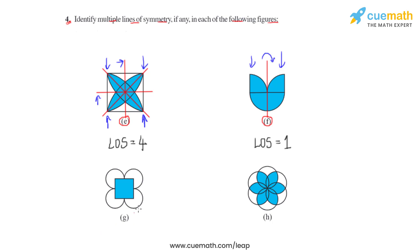Figure G consists of a square with symmetrical shapes around it. Dividing the figure using a diagonal line gives the first line of symmetry. Joining the other two vertices gives the second. Drawing a horizontal line gives the third, and a vertical line gives the fourth. So in total, figure G has four lines of symmetry.